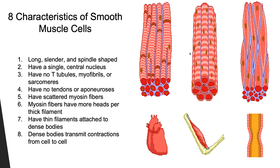Smooth muscle cells are relatively long and slender, ranging from about 5 to 10 micrometers in diameter and 30 to 200 micrometers in length. Although actin and myosin filaments are utilized in contraction, they differ from skeletal and cardiac muscle — there are no sarcomeres or myofibrils, and therefore no striations, making it an unstriated muscle. The thin filaments (actin) are attached to dense bodies rather than Z-lines, and the thick filaments (myosin) have more heads per thick filament and are scattered throughout the sarcoplasm. There are no T-tubules, and the sarcoplasmic reticulum forms a loose network. Visceral smooth muscle cells have no direct contact with motor neurons but are connected by gap junctions, so electrical signals spread from cell to cell. Pacesetter cells are present in areas where peristalsis or rhythmic contraction is necessary.